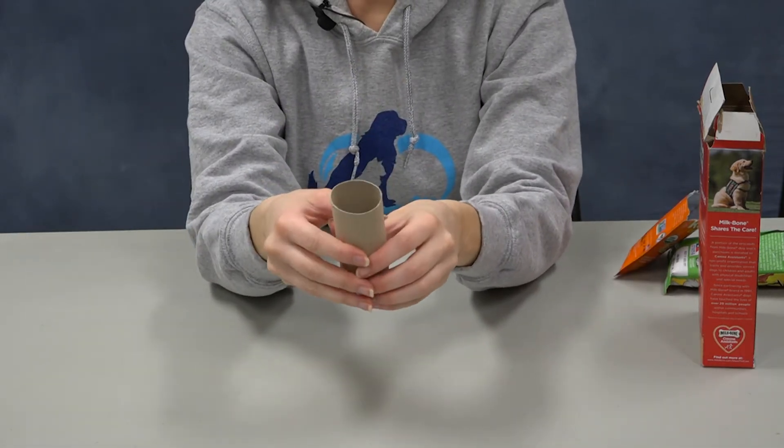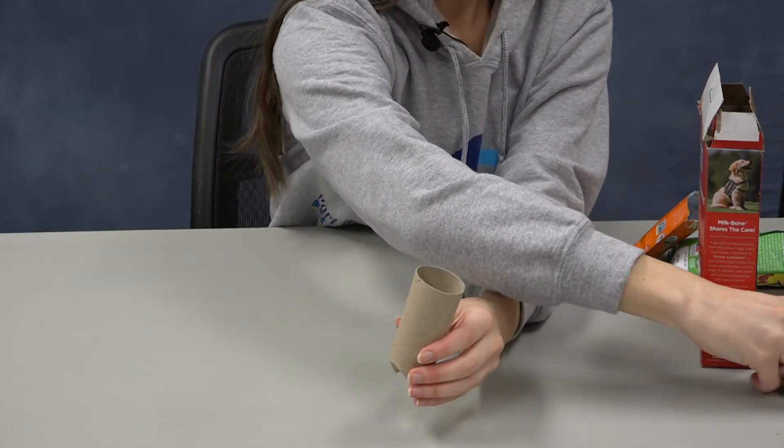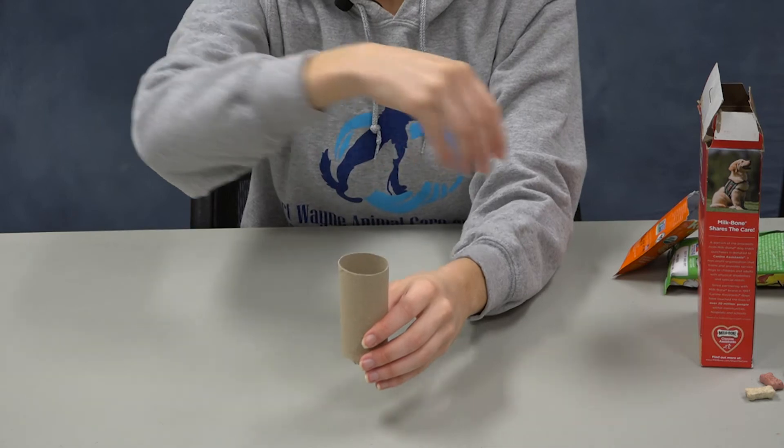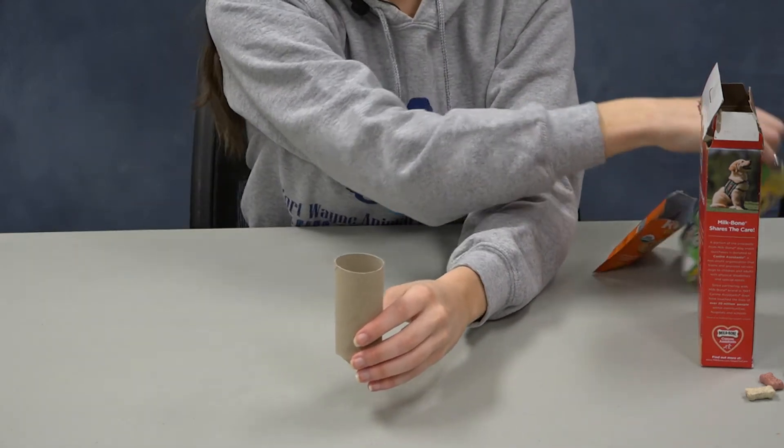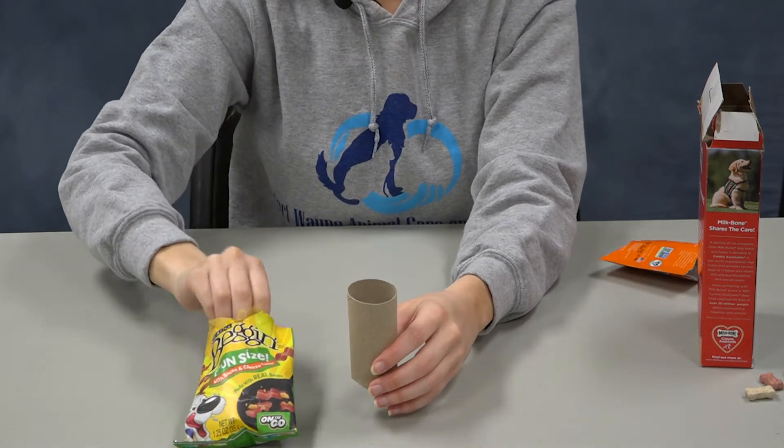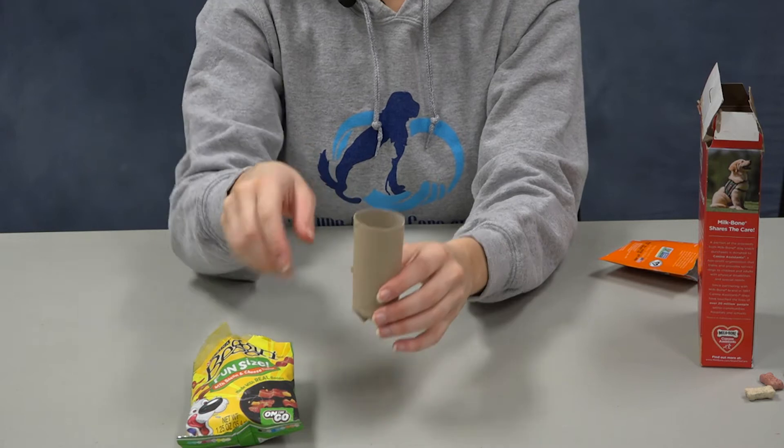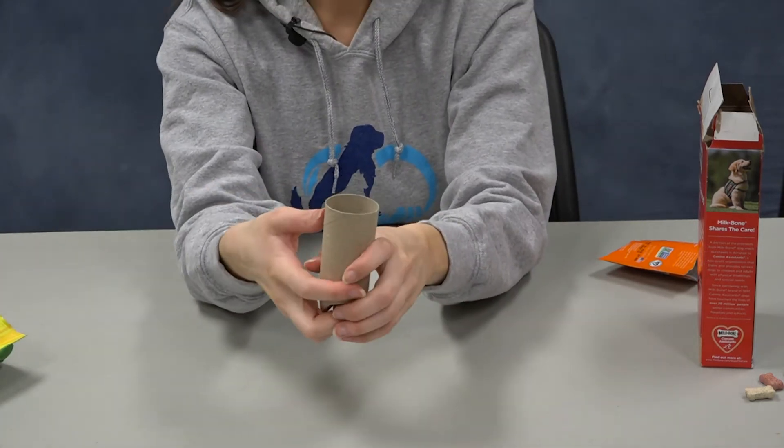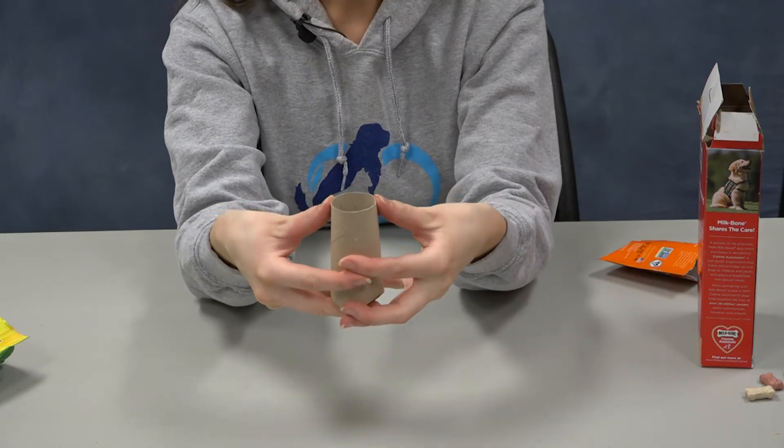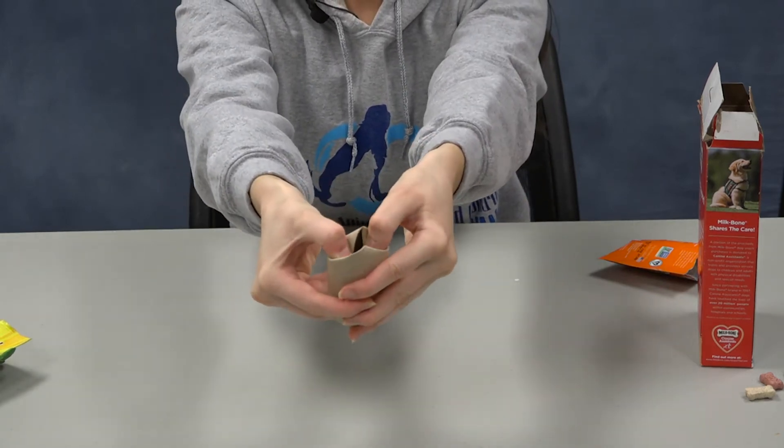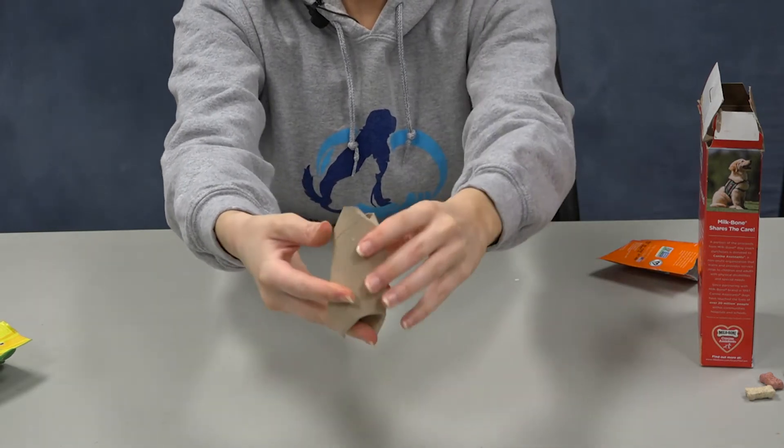Then you're going to flip it over and start filling your toilet paper roll with your dog's favorite treats. So we have some of the biscuits, and then some of our bacon strips, which dogs love. And then what you're going to do to close it is do the same thing as before. You're going to take your two thumbs and push really hard down into the center so that the treats have a hard time falling out.